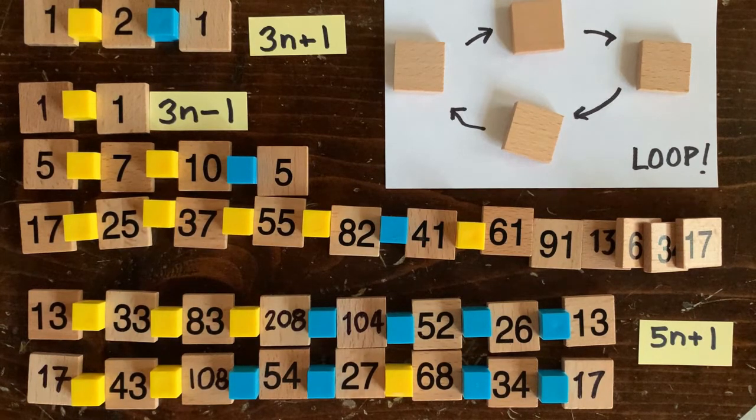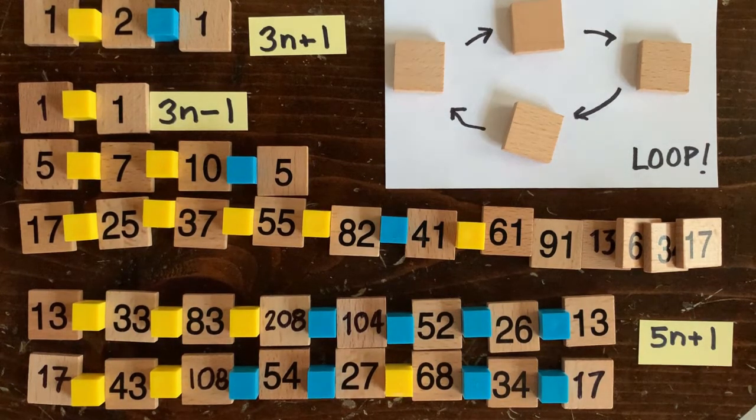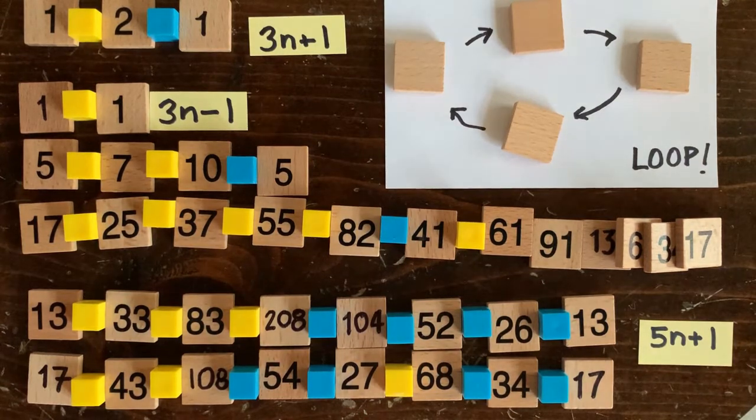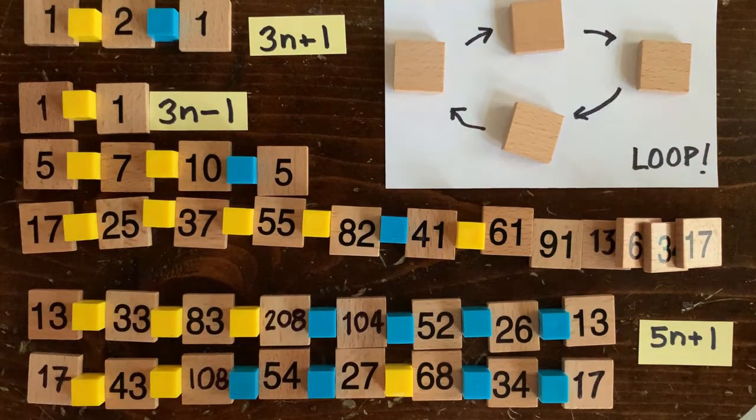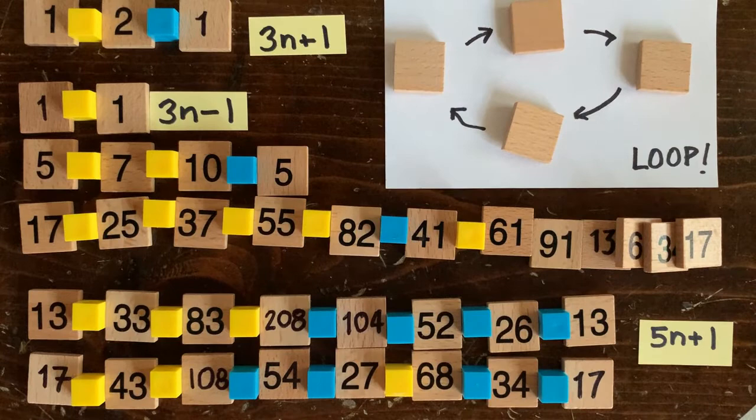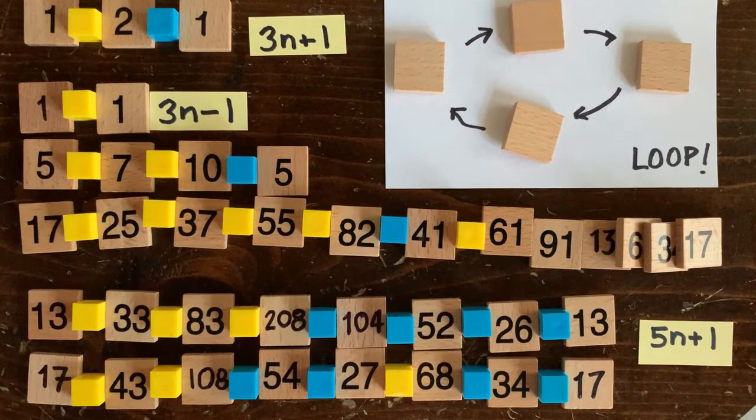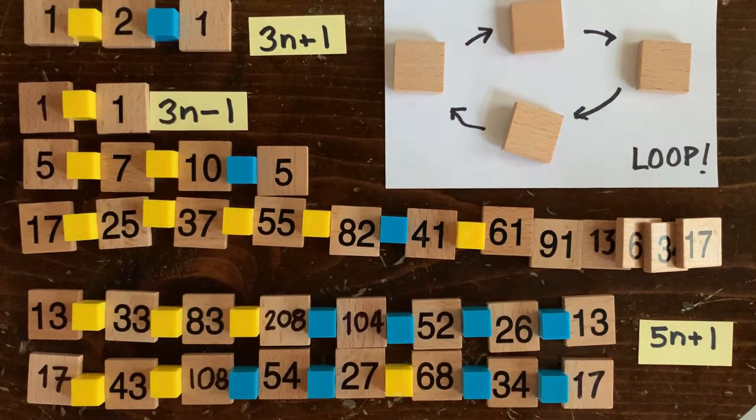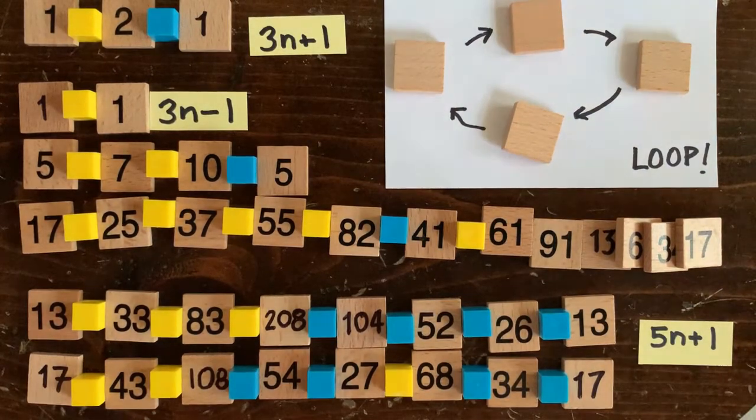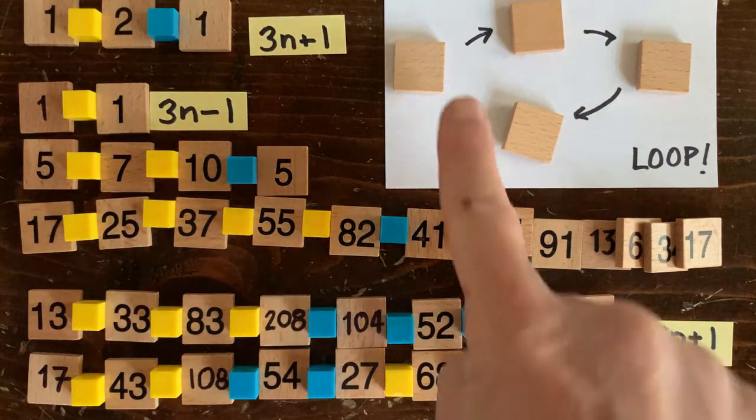Now, the thing to notice about this table is that all these loops are short, and they all involve small numbers. Since the first billion billion numbers have been checked by mathematicians, and they all go to 1, then we know that any other loop besides these is going to have to involve really huge numbers.